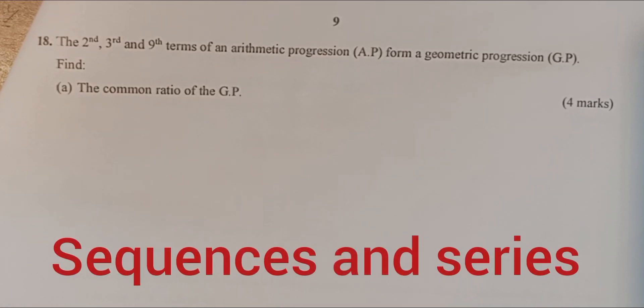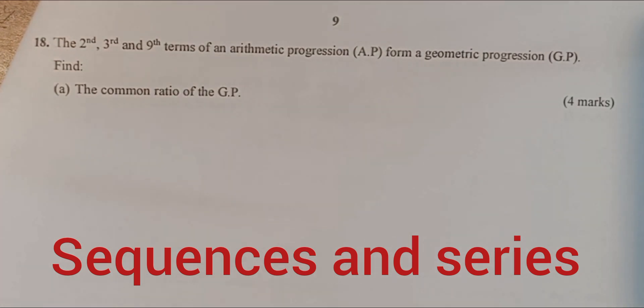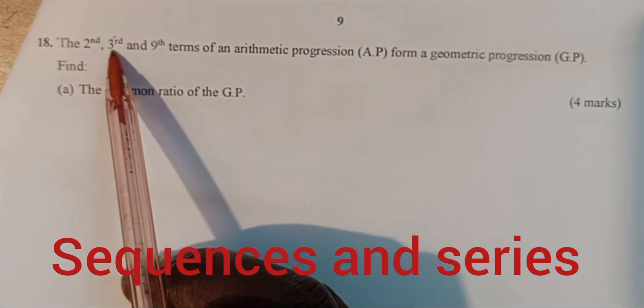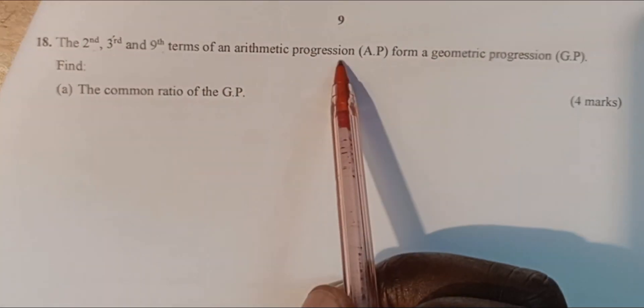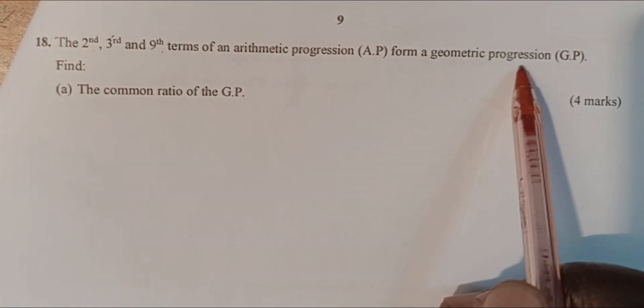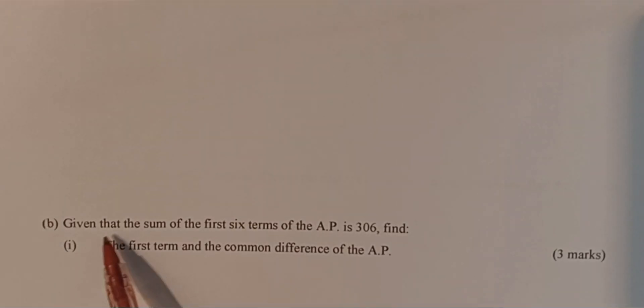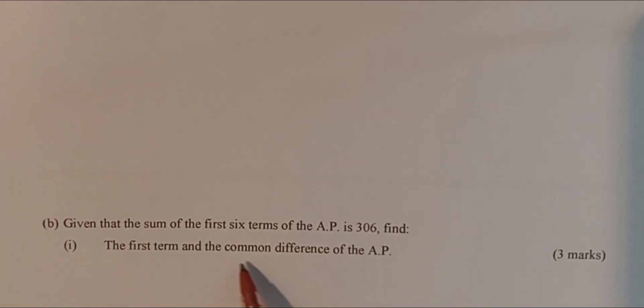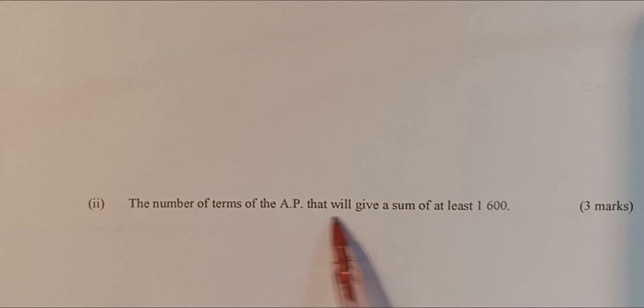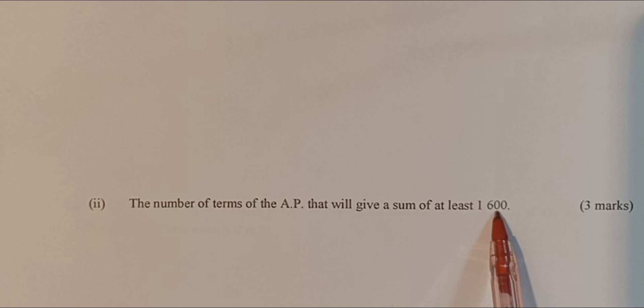Welcome and thank you for joining us. We are looking at sequences and series from the KCSE 2023 mathematics preparation. The question reads: the second, third, and ninth terms of an arithmetic progression AP form a geometric progression. Find the common ratio of the GP. For part B, given that the sum of the first six terms of the AP is 306, find the first term and common difference. We begin with part A.